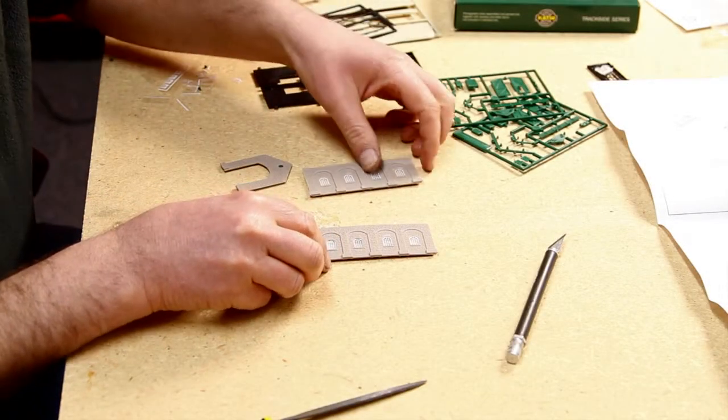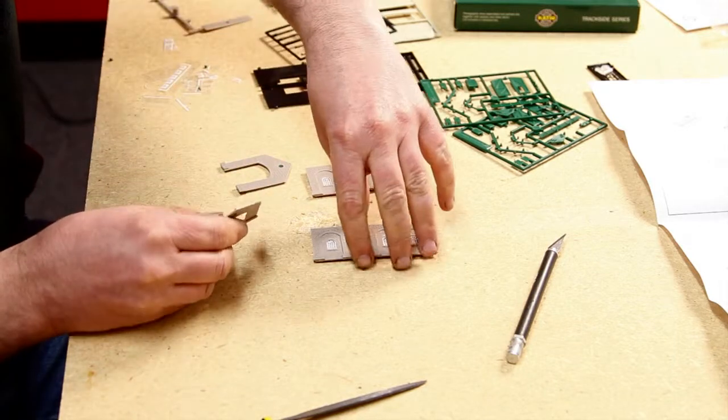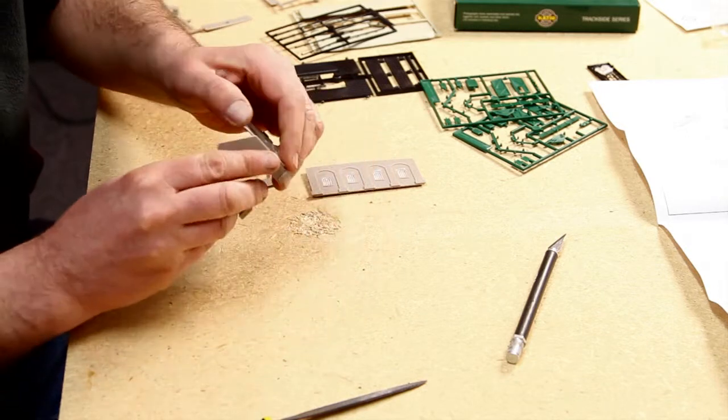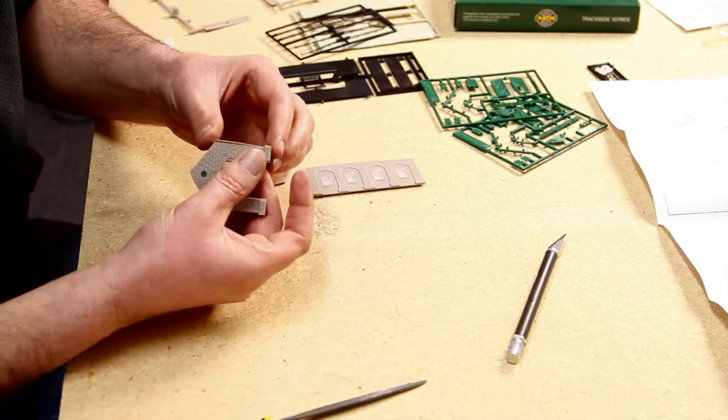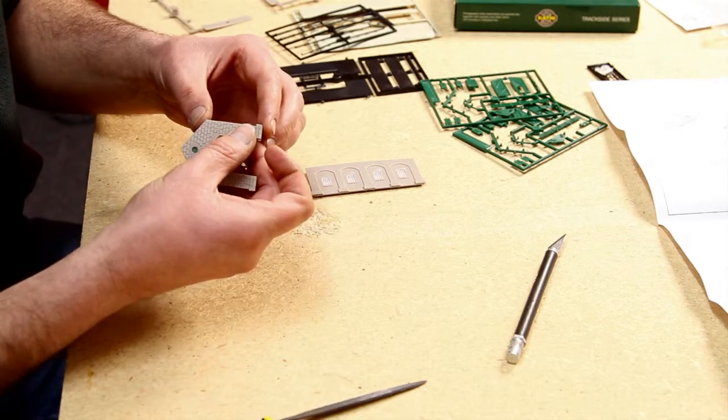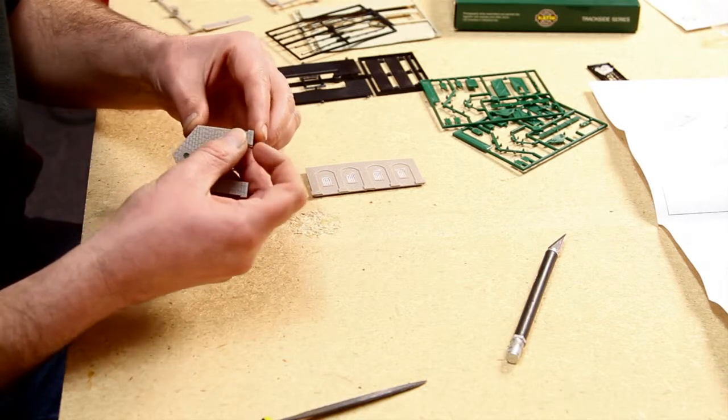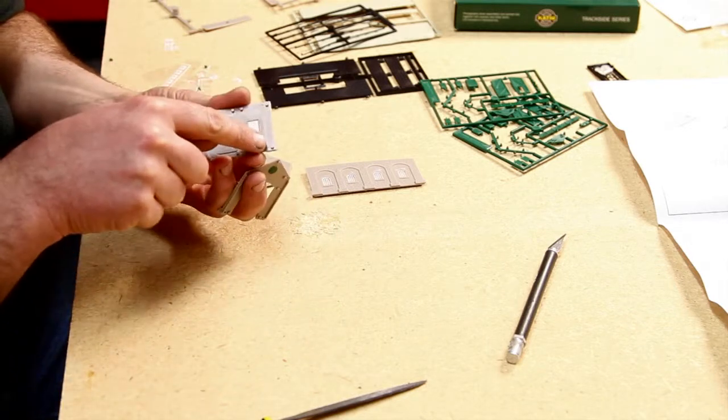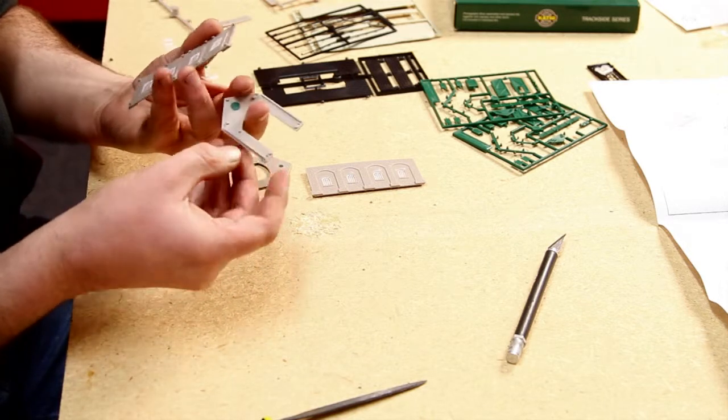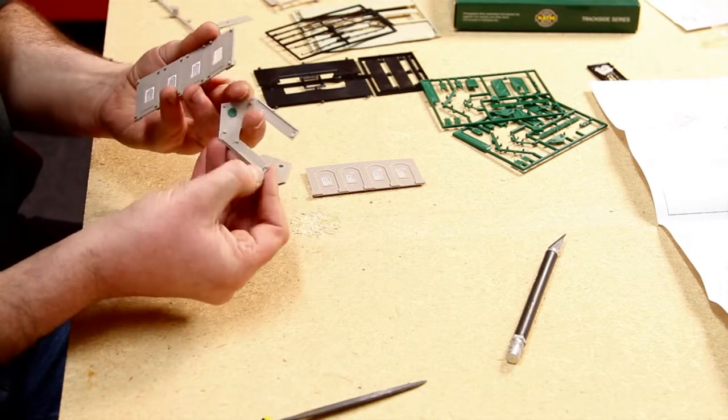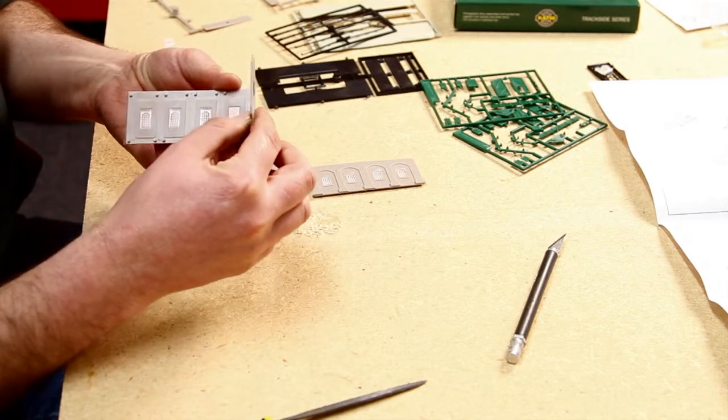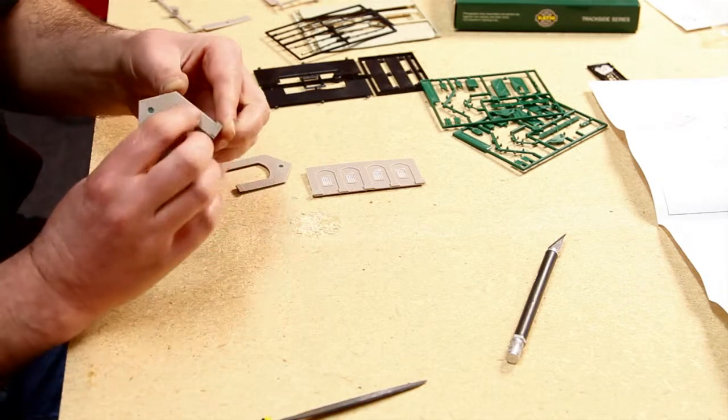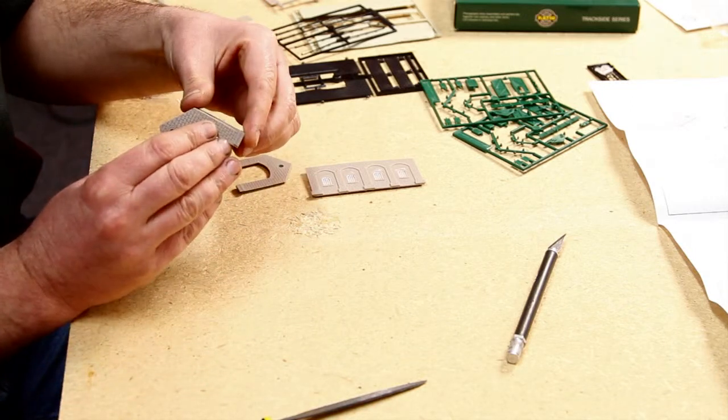Once you've got all your windows inserted, test fit your corners. You can either do it on the flat surface or I find it easier to actually hold it up. In behind there are two lugs and on the back of here there is a long sort of lip that needs to touch the little wee nodules. That will keep your corner square.